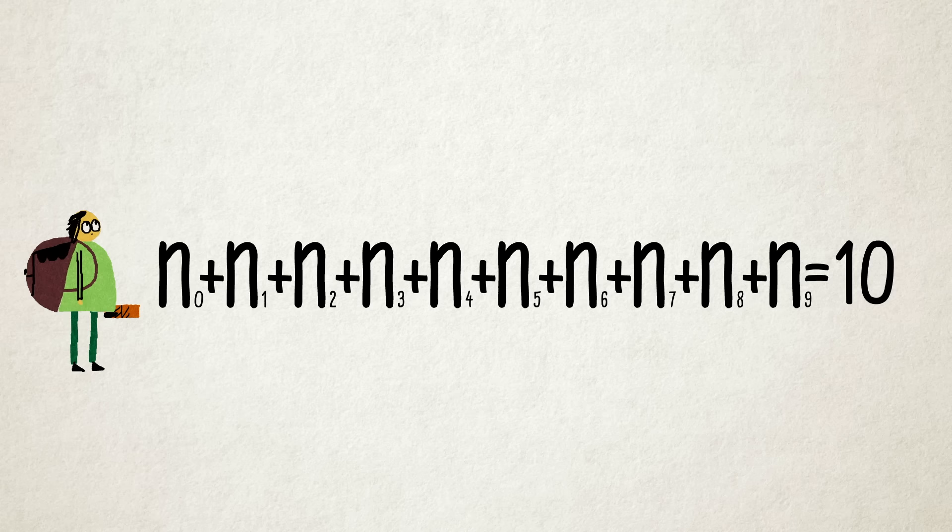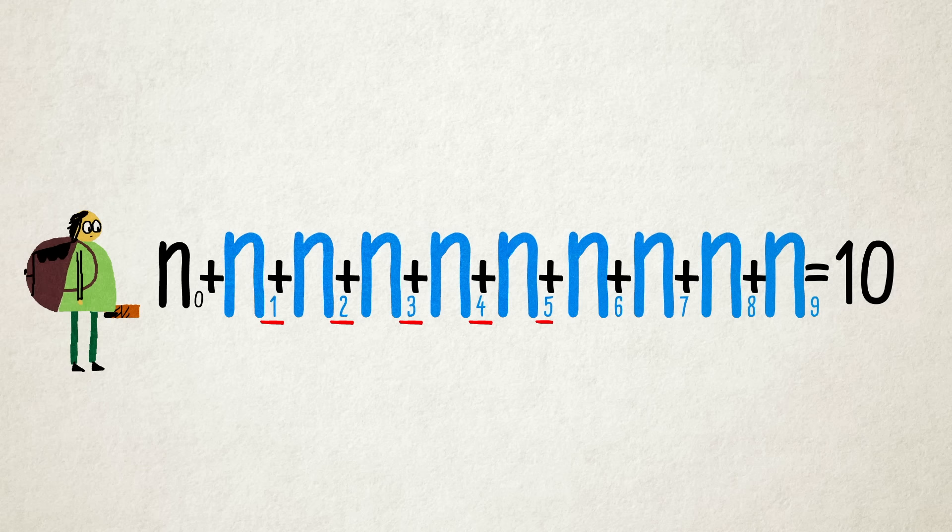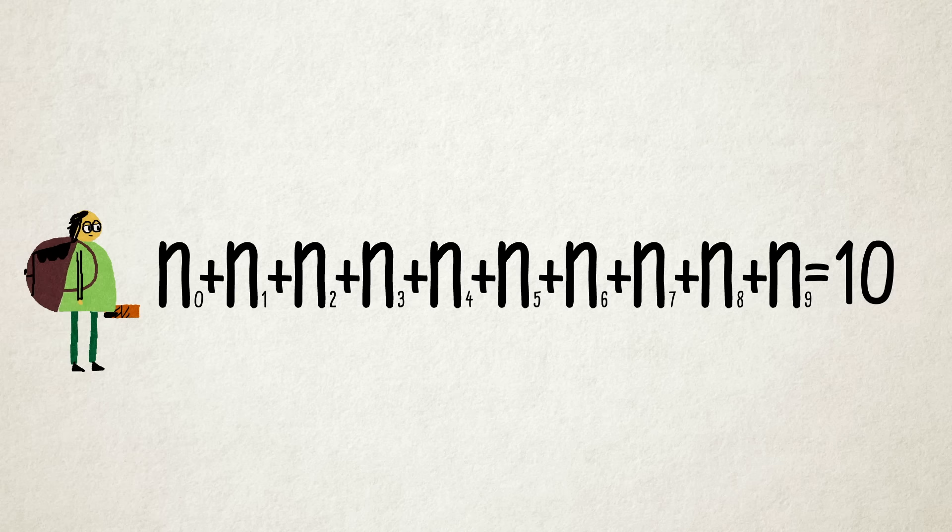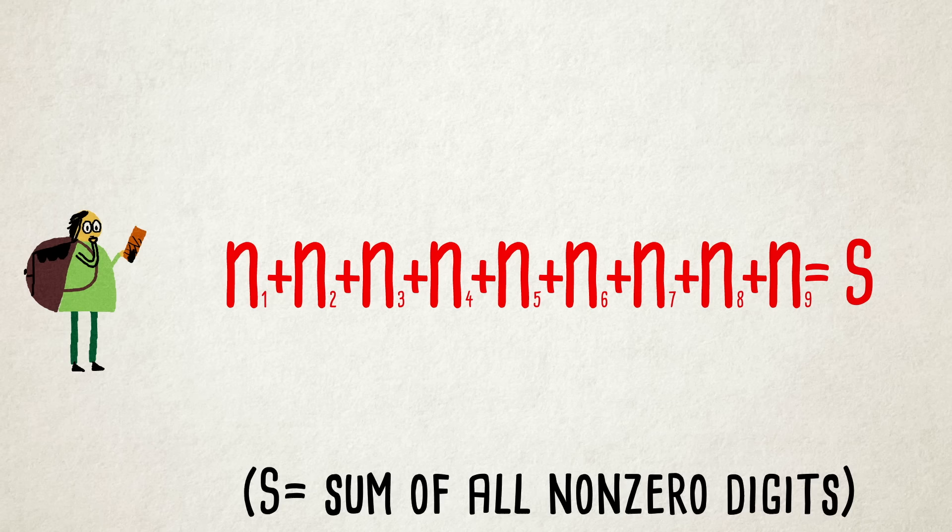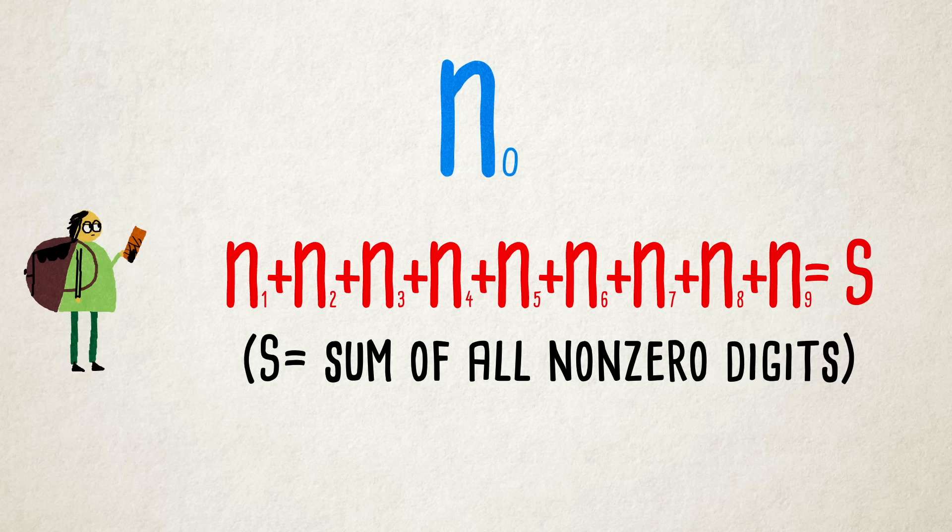Now, while this first digit counts the number of zeros, every digit after it counts how many times a particular non-zero digit occurs. If we add together all the digits besides the first one, and remember, zeros don't increase the sum, we get a count of how many non-zero digits appear in the sequence, including that leading digit.